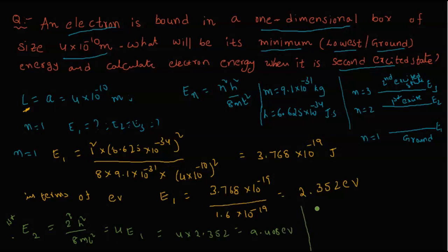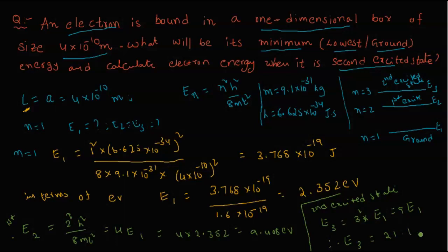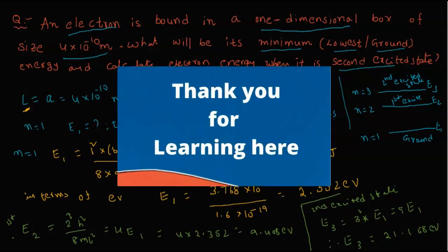For the second excited state (n=3), E3 = 3² × h²/(8mL²) = 9 × E1. Therefore, E3 = 9 × 2.352 = 21.168 electron volts. Thank you, students.